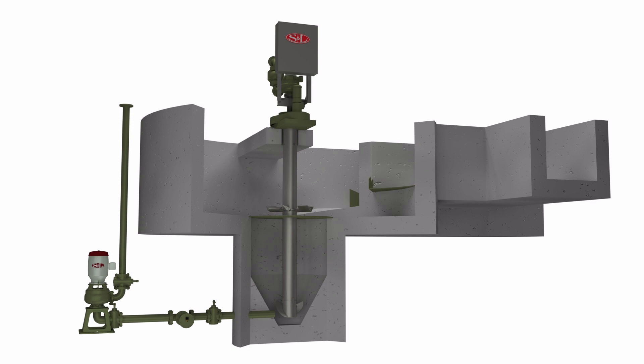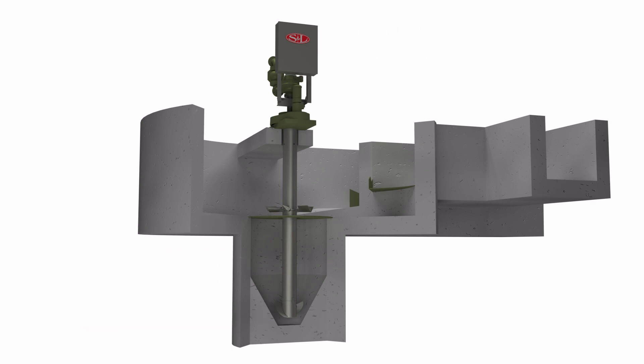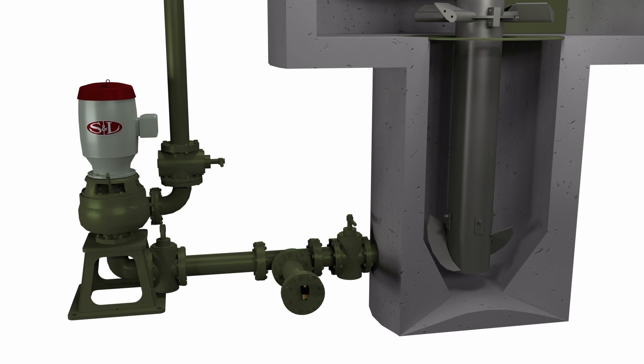Two options are available for pumping grit from the hopper to a dewatering unit: the Pista top mounted or the Pista flooded suction grit pump. Both the top mounted Pista turbo grit pumps and flooded suction Pista turbo grit pumps offer unique advantages.